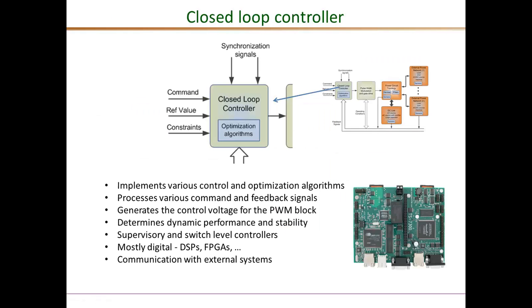The closed loop controller is the brain of the power converter system. It is responsible for implementing the various control laws and different optimization algorithms specific to that application. It processes the various command signals, the reference values, and the feedback signals, and uses that to generate the final control voltage needed by the PWM block to generate the switching signals. The dynamic performance and stability of the converter is completely determined by how the closed loop controller is designed. For larger systems like renewable energy applications, they are almost always implemented using some digital platform — DSPs or FPGAs. The controller is also responsible for communications with external systems.